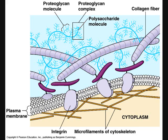Some of the specialized proteins that are in the ECM are fibrillin, fibronectin, and laminin. The types of specialized proteins vary based on each individual cell.